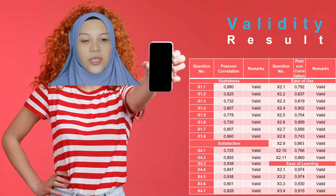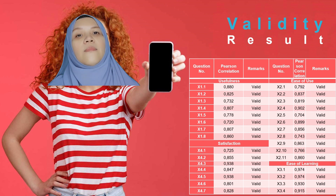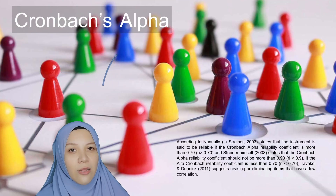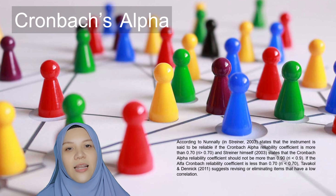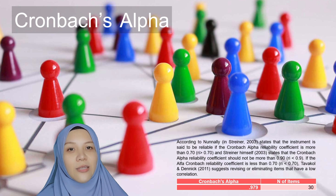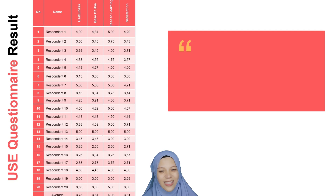For the validity result, all four domains — usefulness, satisfaction, ease of use, and ease of learning — are valid. For the Cronbach's Alpha reliability test, a value above 0.7 means reliable, and our Cronbach's Alpha value is 0.979, which means this is reliable.